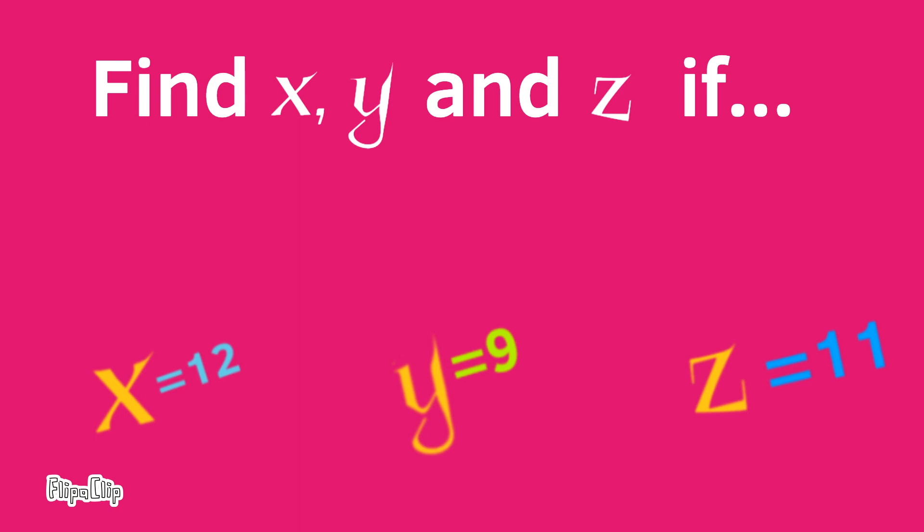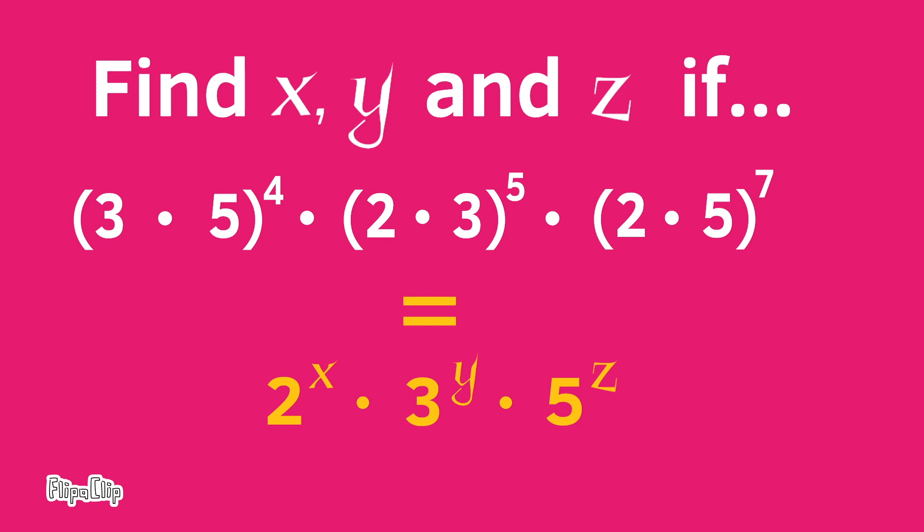Let's solve this a different way. First, let's use the distributive property and bring the exponents to all the base numbers inside the parentheses. Then we can combine the like terms.